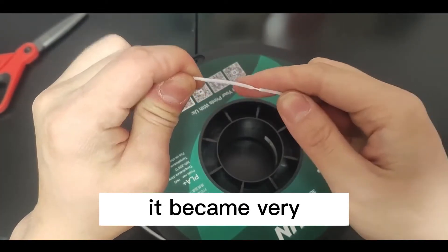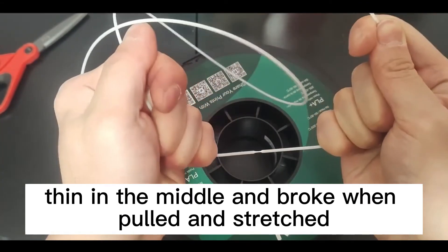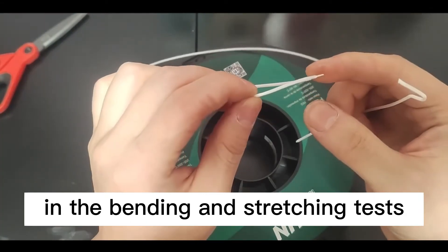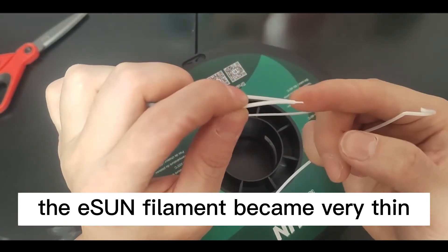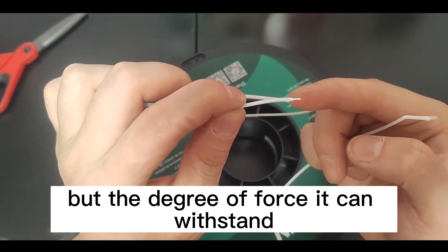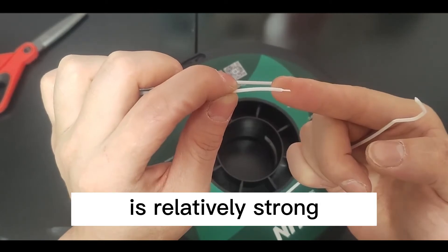It became very thin in the middle and broke when pulled and stretched. In the bending and stretching tests, the E-Sun filament became very thin, but the degree of force it can withstand is relatively strong.